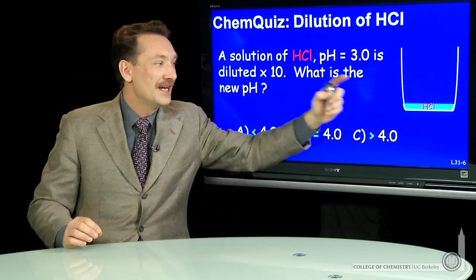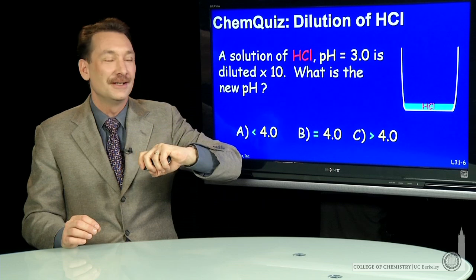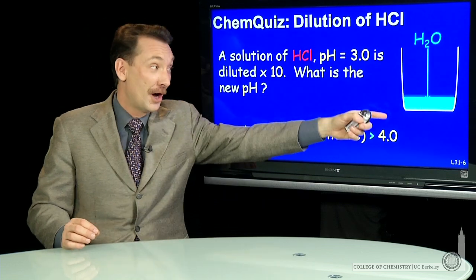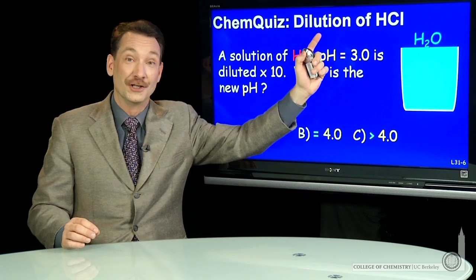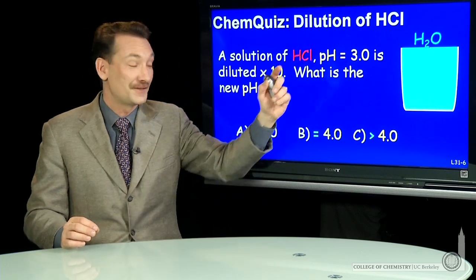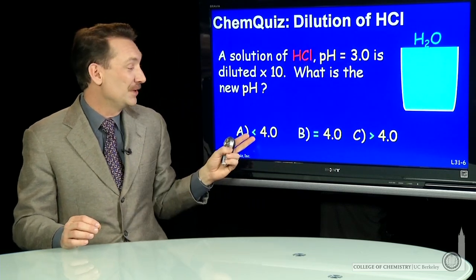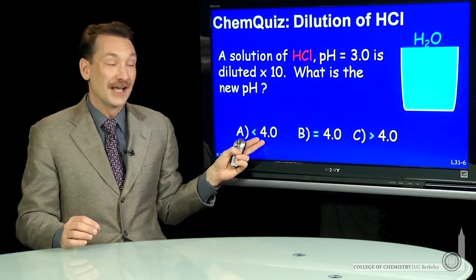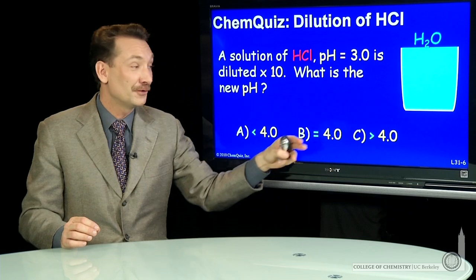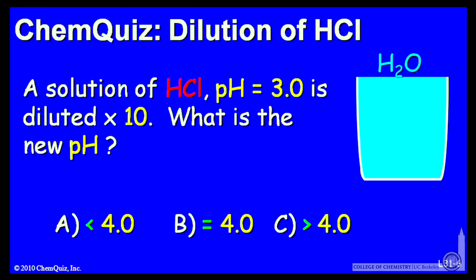So an HCl solution — I add water, dilute it by a factor of 10. Is the new pH less than 4, equal to 4, or greater than 4? Think about that for a minute and make a selection.